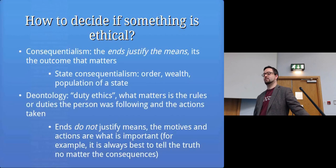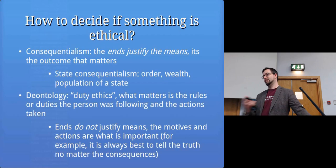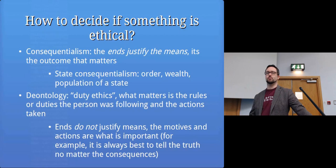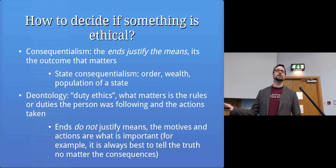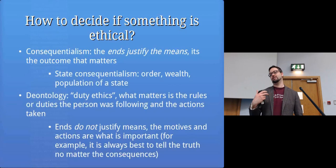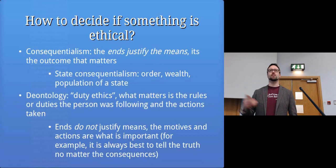Deontology is duty ethics - what matters isn't the end result but what you would need to do to get there, and whether those actions are according to your own set of ethics. For example, if someone's lying on their deathbed and asks if they're going to be okay, deontology says you tell them the truth because it's not right to lie. But consequentialism would say you lie to them because they'll feel better, and that's the better end result.